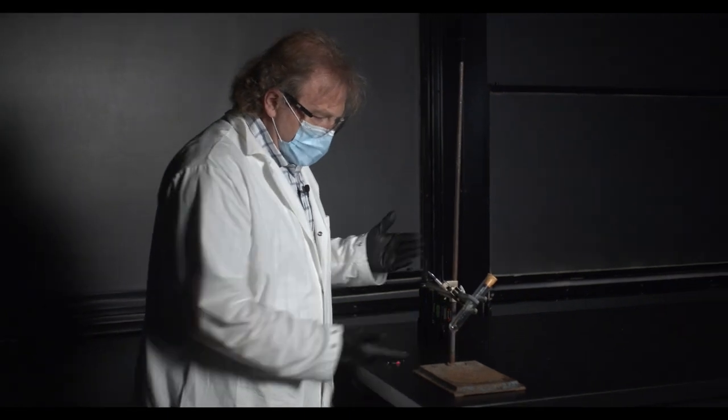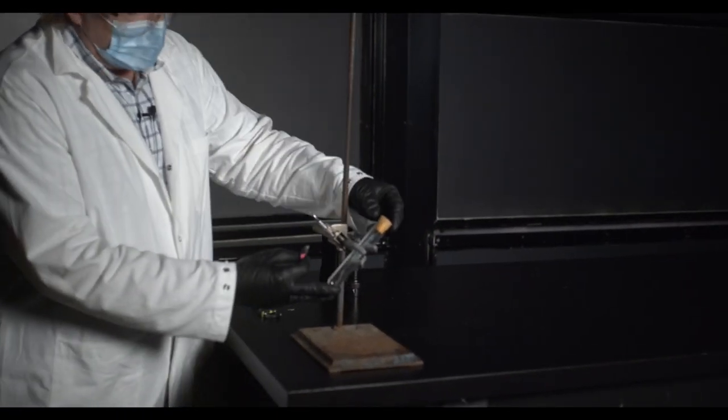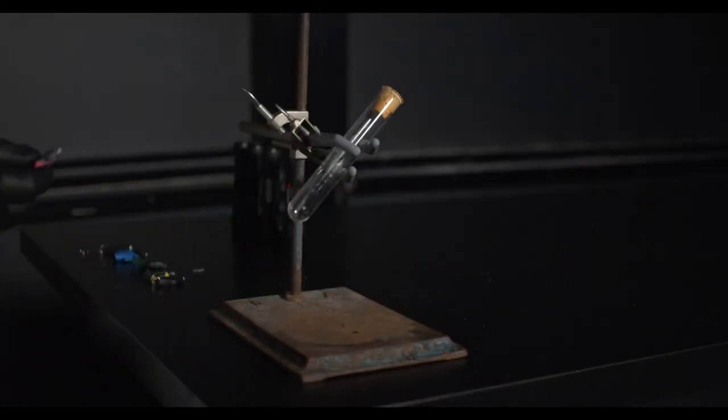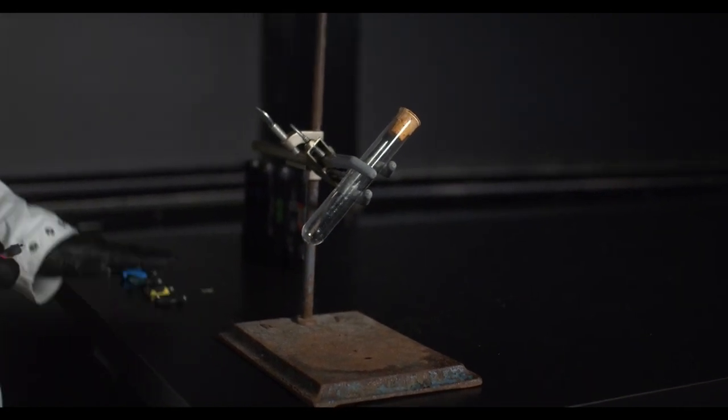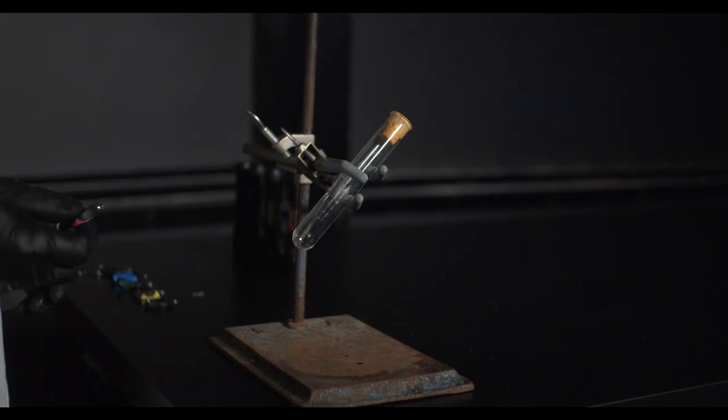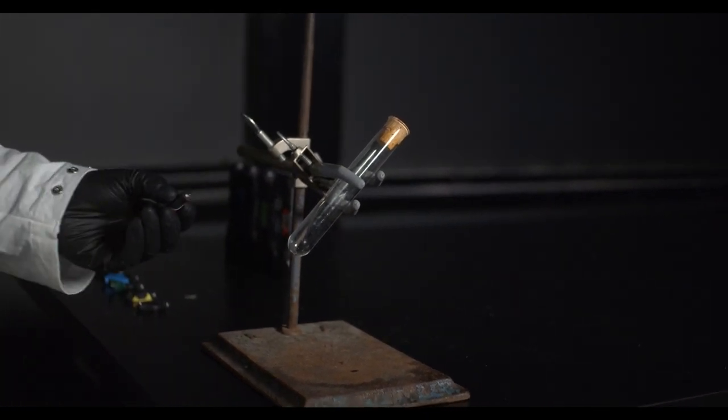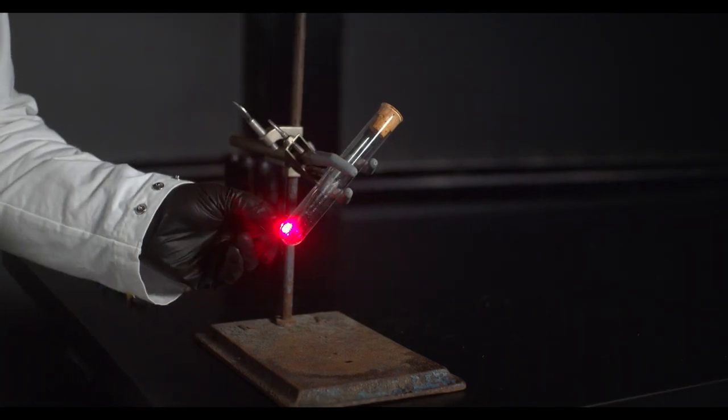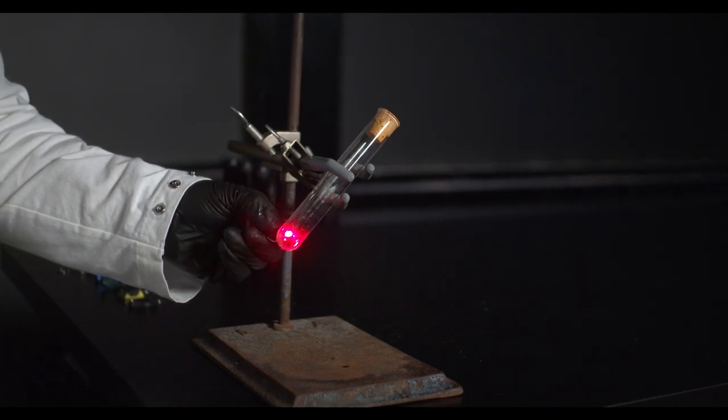Okay. Here we have a quartz test tube full of a stoichiometric mixture of hydrogen and chlorine, one to one. And we understand that hydrogen and chlorine is a reaction that can be set off with light. And so we're going to experiment with different frequencies of light to see what the threshold of reaction is.